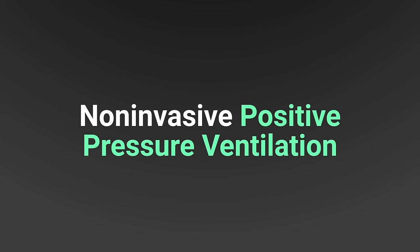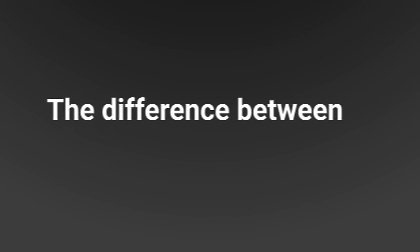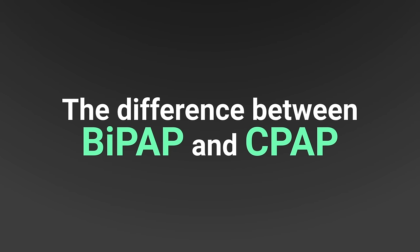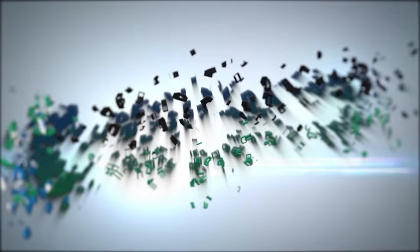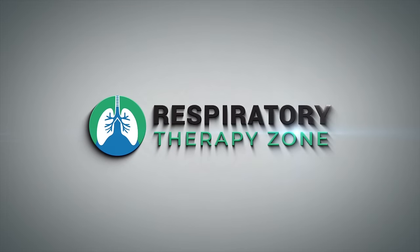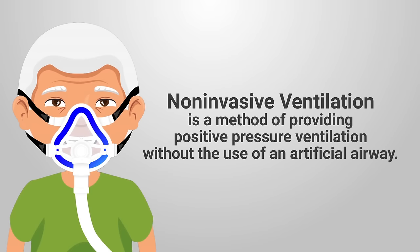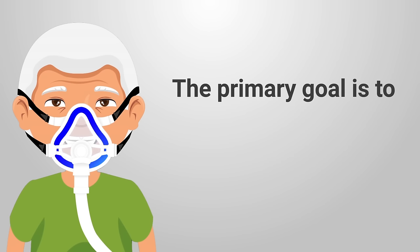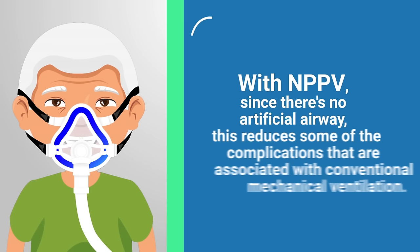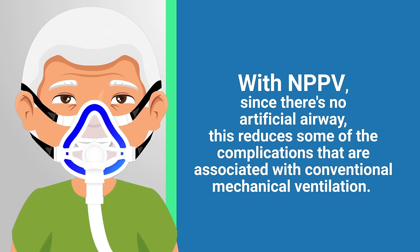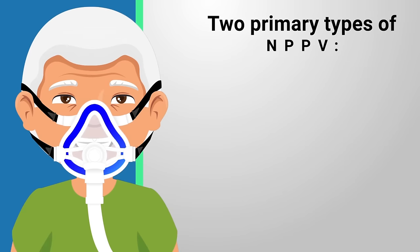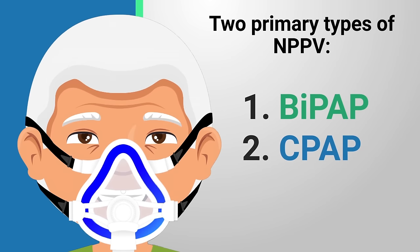In this video we are going to talk about non-invasive positive pressure ventilation and more specifically the difference between BiPAP and CPAP. Non-invasive ventilation is a method of providing positive pressure ventilation without the use of an artificial airway. The primary goal of non-invasive ventilation is to avoid intubation, and since there's no artificial airway, this reduces some of the complications associated with conventional mechanical ventilation. There are two primary types: BiPAP and CPAP.